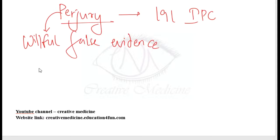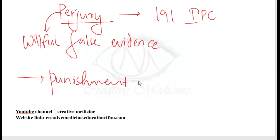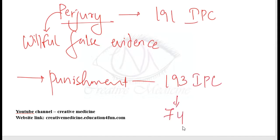Punishment for false evidence is given under Section 193 IPC. For perjury, the imprisonment according to Section 193 IPC is up to 7 years.